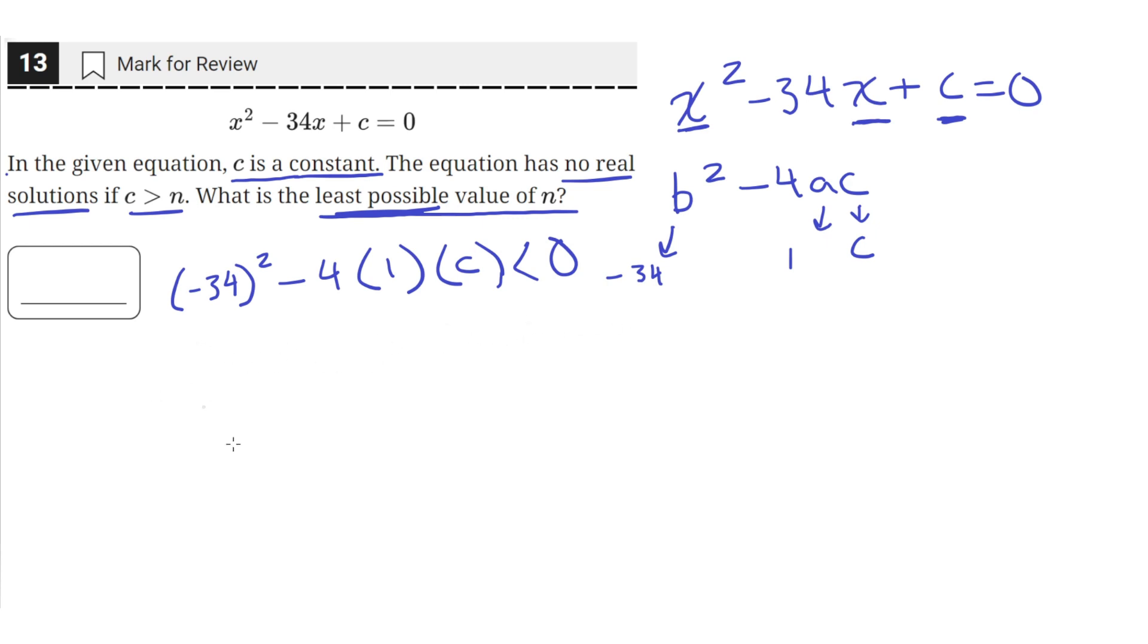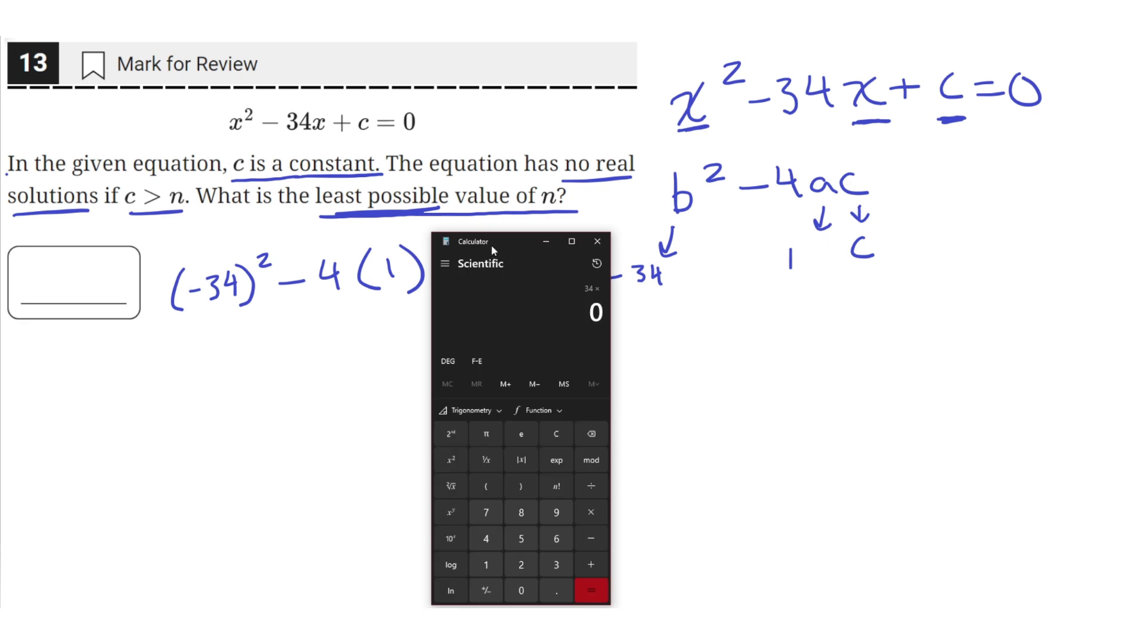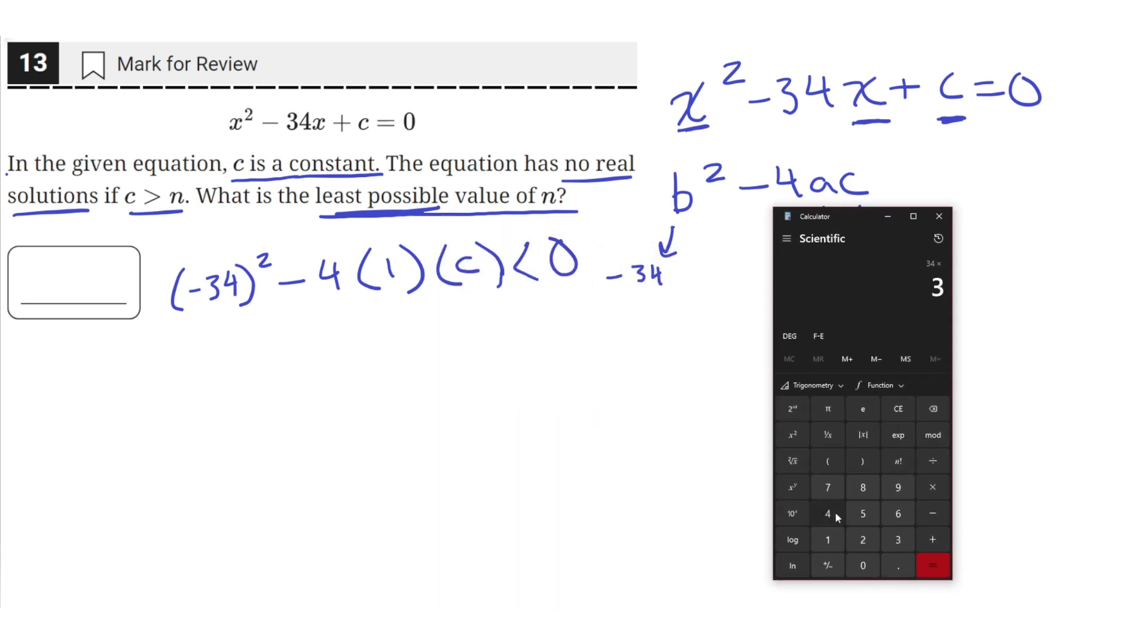So now let's simplify this inequality. Negative 34 squared is just equal to positive 34 times 34, which is just equal to 1,156 minus 4c.